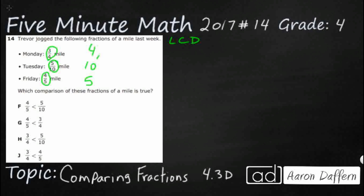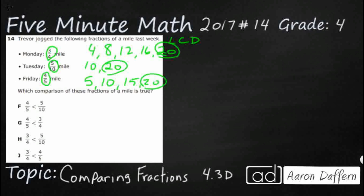I'm going to count by 4s: 4, 8, 12, 16, 20. 20 might work. 20 shows up here on the 10s list. Let me see if 20 shows up on the 5s list as well — 5, 10, 15, 20. There we go. You're looking for a number that shows up on all three lists.